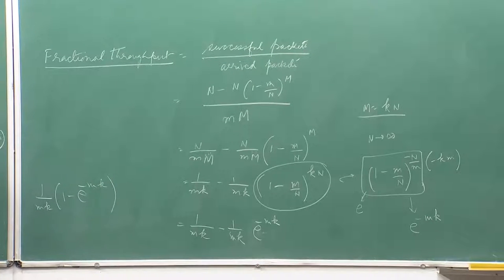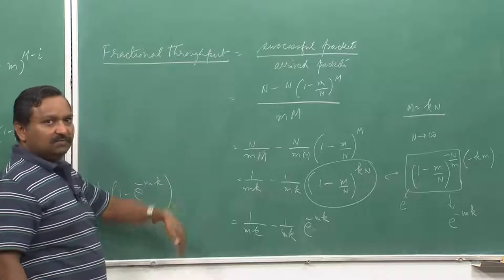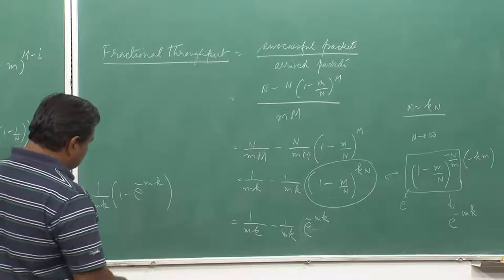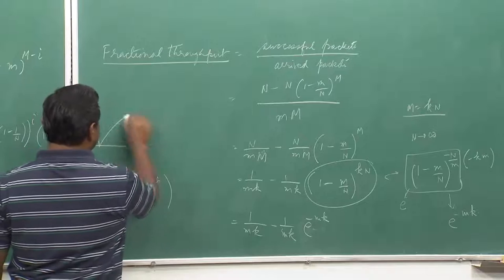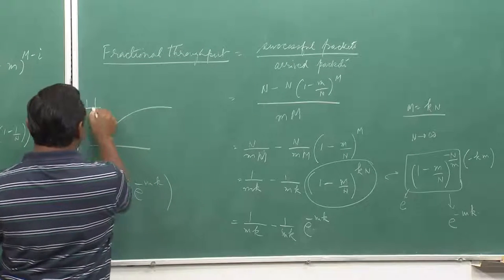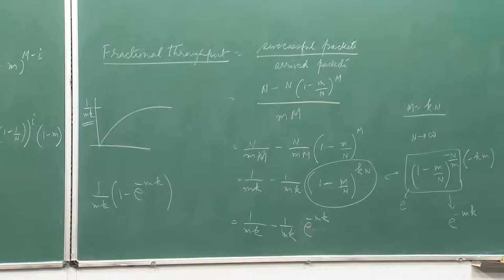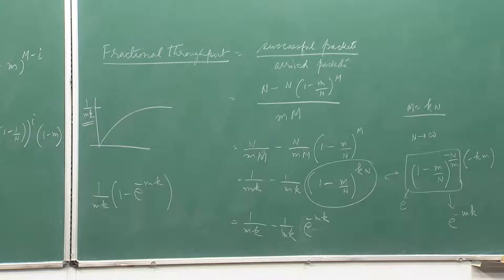With m going from 0 to 1, as m grows from 0 the fractional throughput starts at 0, rises to a maximum, then drops. As m goes to infinity the value saturates at 1/(mk). The maximum throughput achievable is 1/(mk), and when k equals 1 — meaning m equals n — the maximum fractional throughput is 1 minus 1/e, approximately 0.632.